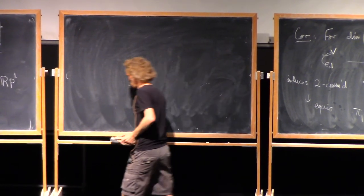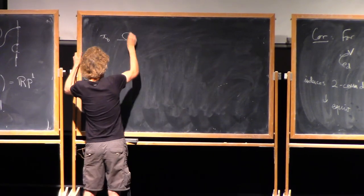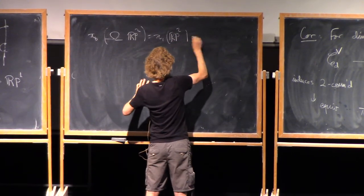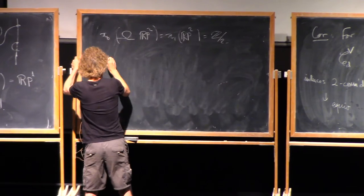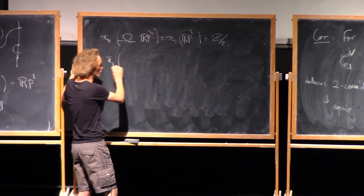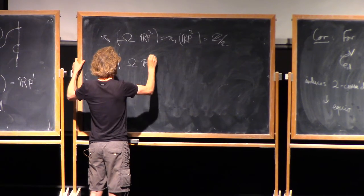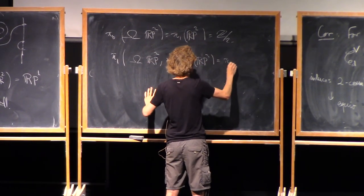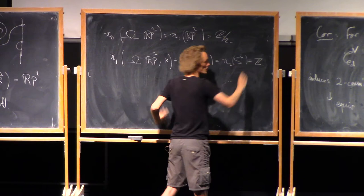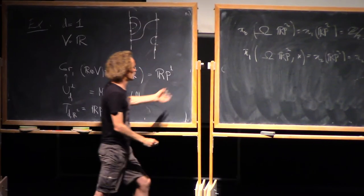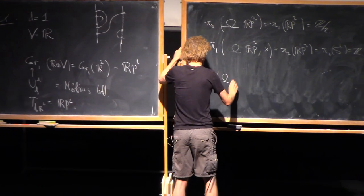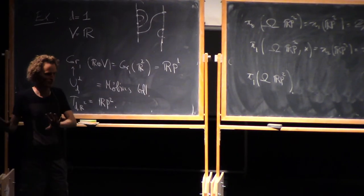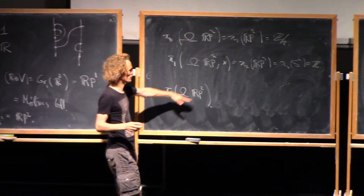Then you take loops of RP^2 and you take the fundamental groupoid. Well, the fundamental groupoid has to do with pi_0 and pi_1. So pi_0 of loops of RP^2, that's pi_1 of RP^2, which is Z mod 2. Whereas pi_1, the fundamental group, loops of RP^2 at a base point is pi_2 of RP^2, which is pi_2 of S^2, which is Z. So that tells you that the fundamental groupoid of loops of RP^2, up to equivalence, it has just two objects. I mean, it has two isomorphism classes. But if I pick one of each, the isomorphism group is going to be Z.